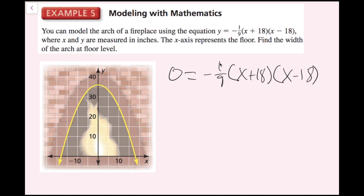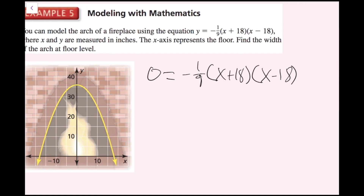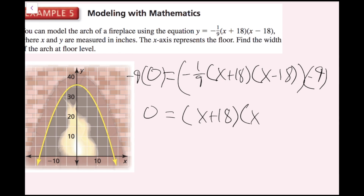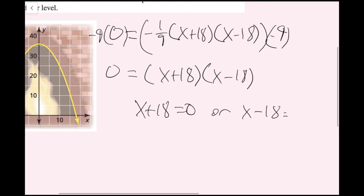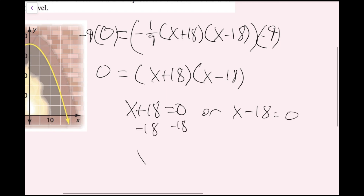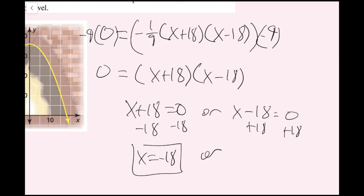Rewriting with y equals zero: 0 equals negative 1 ninth times x plus 18 times x minus 18. I multiply both sides by negative 9 to cancel the negative 1 ninth, leaving 0 equals x plus 18 times x minus 18. Using the zero product property: x plus 18 equals zero gives x equals negative 18, and x minus 18 equals zero gives x equals positive 18. My two x values are negative 18 and positive 18.